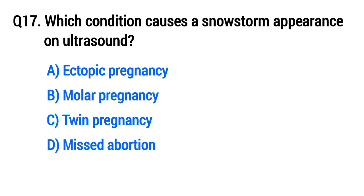Question No. 17: Which condition causes a snowstorm appearance on ultrasound? The right option is B, molar pregnancy.